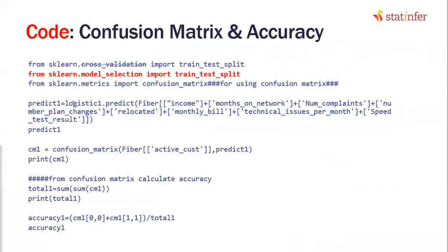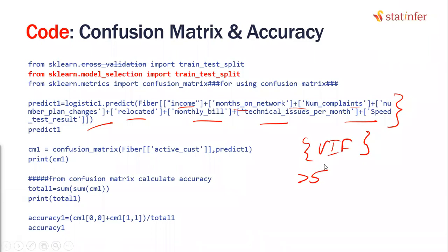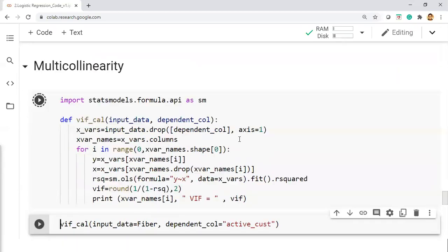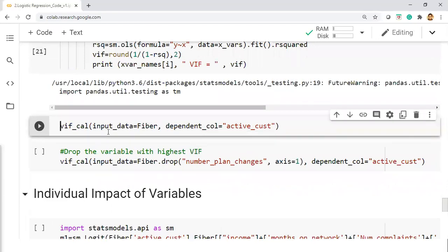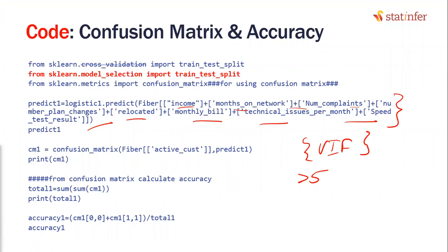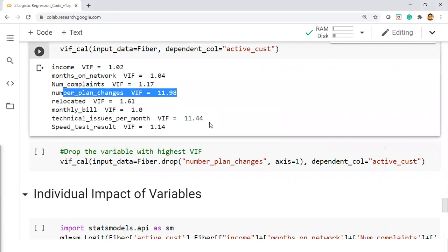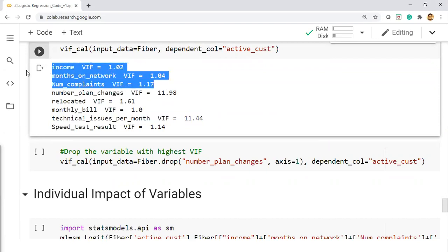Can you go back to your model? You are using several variables — I don't know whether multicollinearity exists or not. Do the VIF test and tell me whether there is any multicollinearity. Is there a variable with more than five VIF? So there is a variable — number of plan changes — with more than five VIF, and technical issues per month also with more than five.